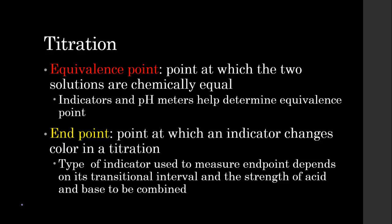The type of indicator that we use to measure the end point will depend on its transitional interval. So we have lots of different types of acids and bases, lots of different strengths. So we have lots of different indicators that we can use. Our indicator has to fall within that range.